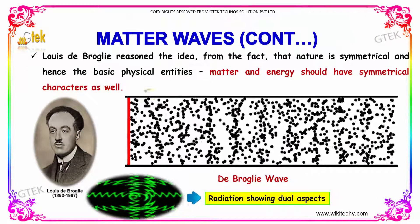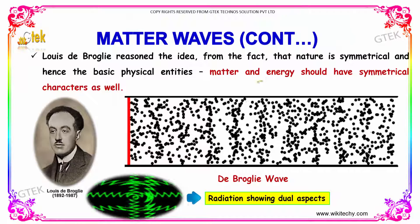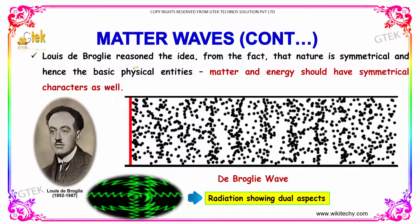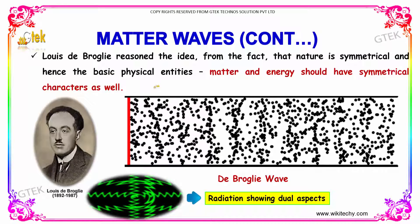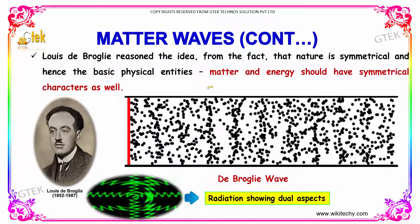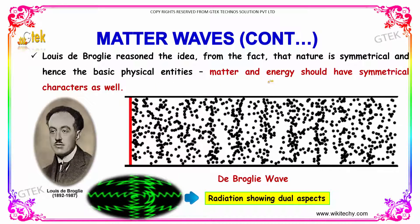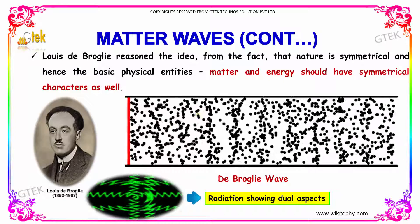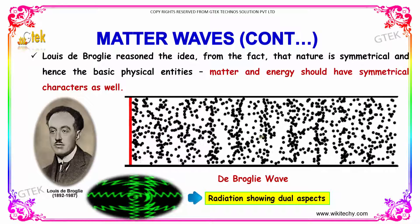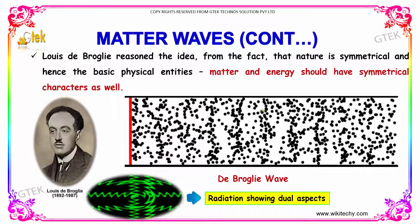Louis de Broglie reasoned the idea from the fact that nature is symmetrical, and as a basic physical entity, matter and energy should have symmetrical character as well.